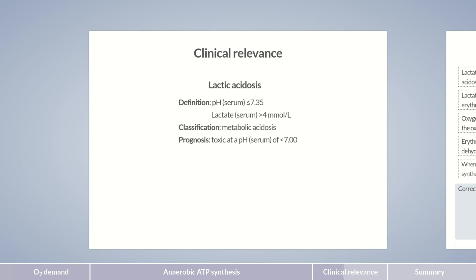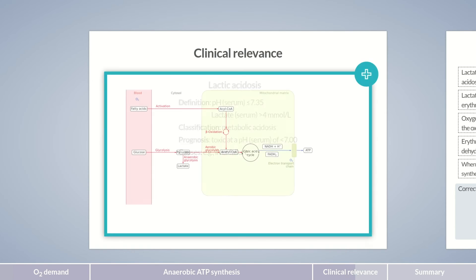Potential causes of lactic acidosis are an inadequate oxygen supply, impaired lactate clearance, or a generally disturbed metabolism. Lactic acidosis is, for example, a potential complication of liver failure. Some drugs can also cause lactic acidosis. One such drug is metformin, which was introduced in episode 7 of this course.